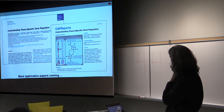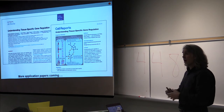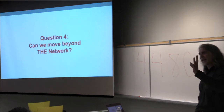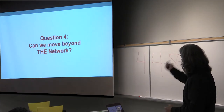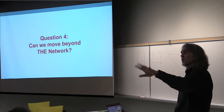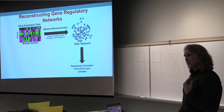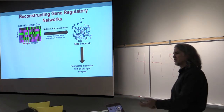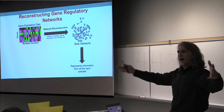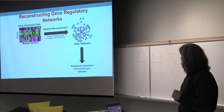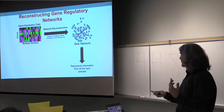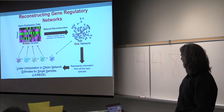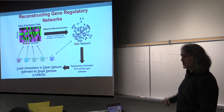We've published a lot of papers using this method, including one looking at 38 different tissues and asking what makes a tissue a tissue. In the last few minutes I want to address: can we move beyond the network? When we estimate networks, we estimate them using a population — one network representing all samples in the room — it's an average. So we developed a method called LIONESS that allows us to estimate individual sample networks, based on a simple idea around linear interpolation.